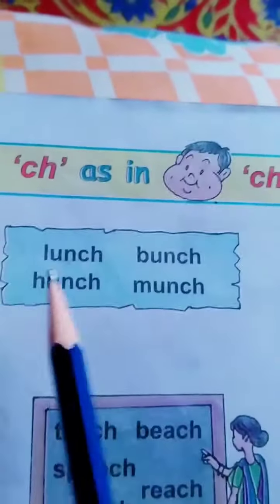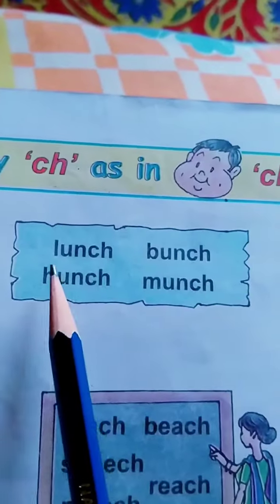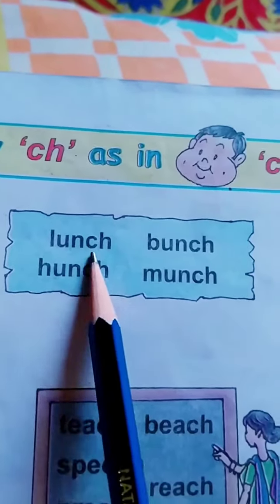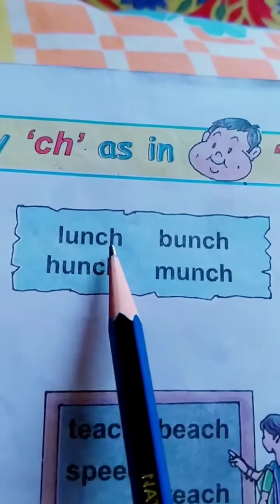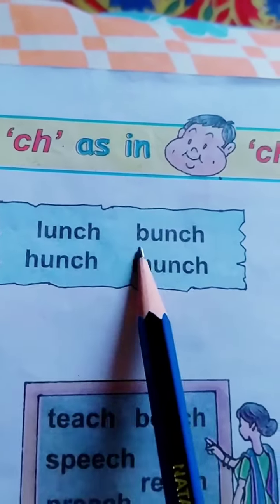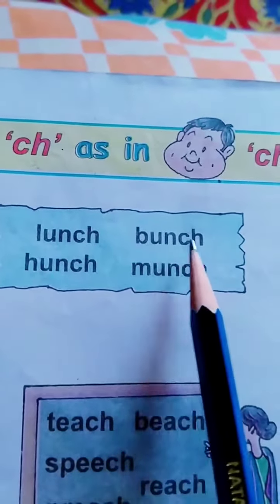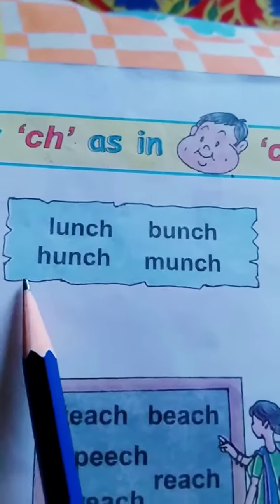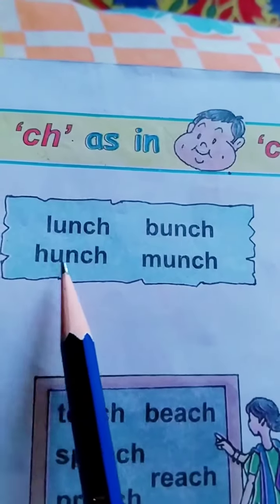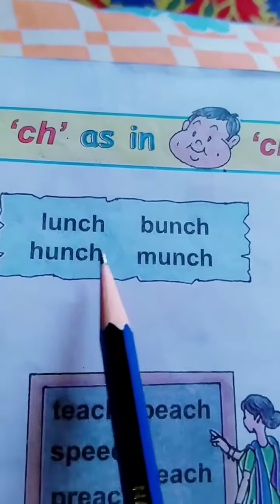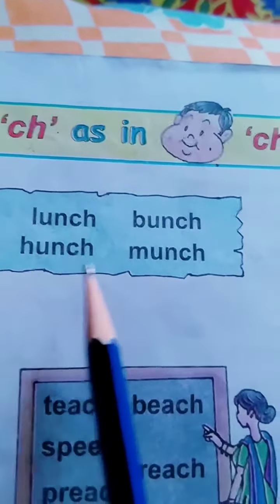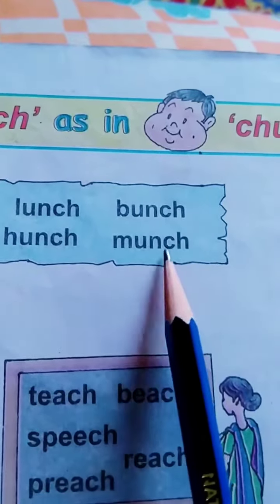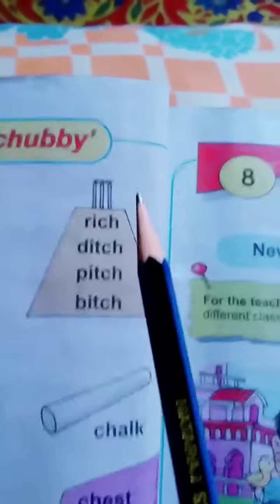Next word is L U N C H — lunch. B U N C H — bunch. H U N C H — hunch. M U N C H — munch.